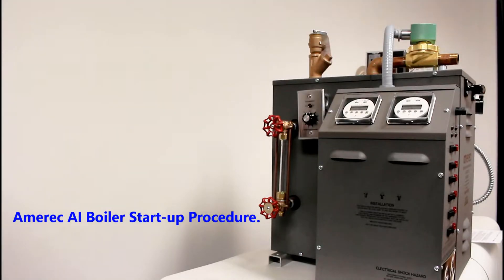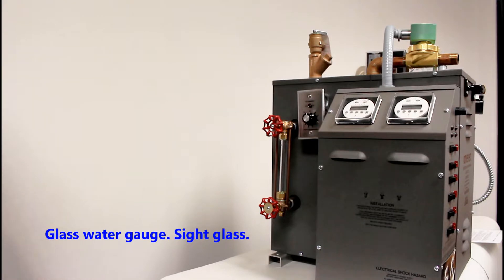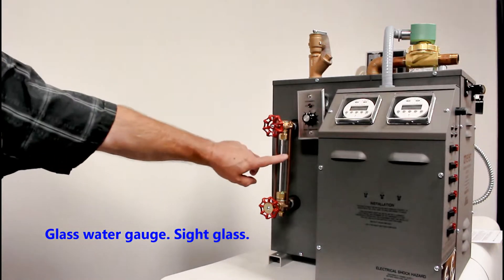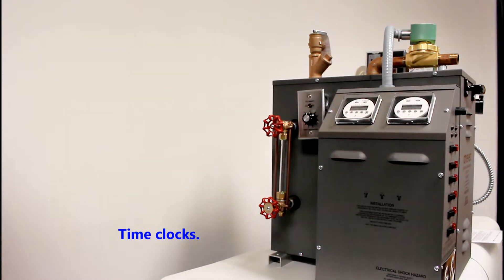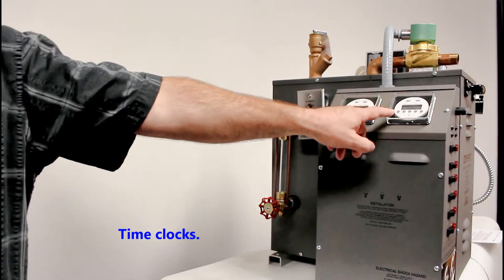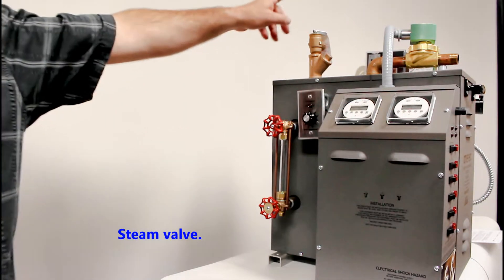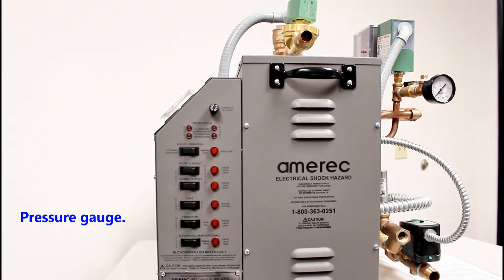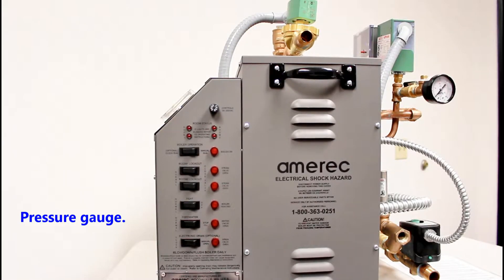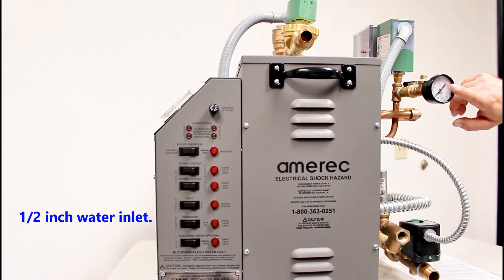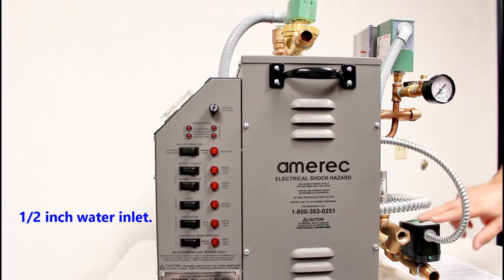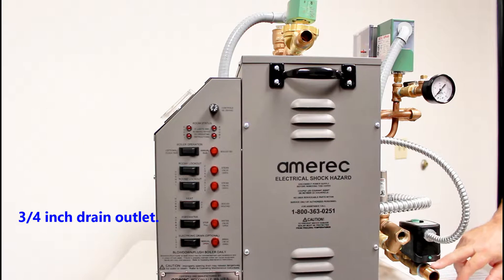AMRAC AI Boiler Startup Procedure. Glass water gauge, sight glass. Time clocks. Pressure release valve. Steam valve. Pressure gauge. Half inch water inlet. Three quarter inch drain outlet.